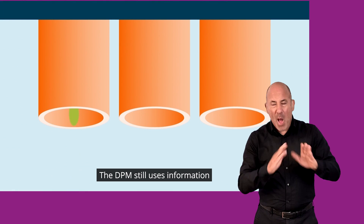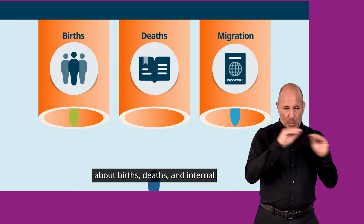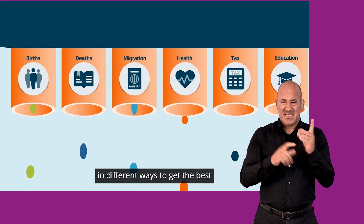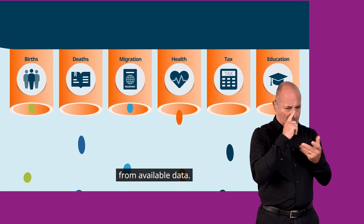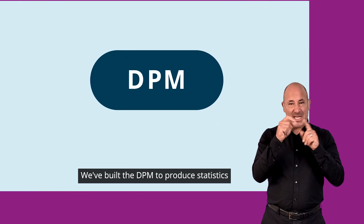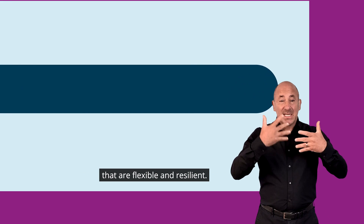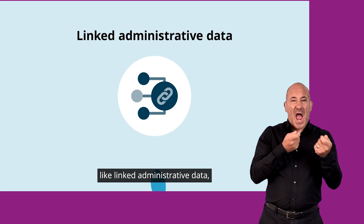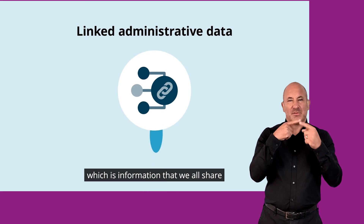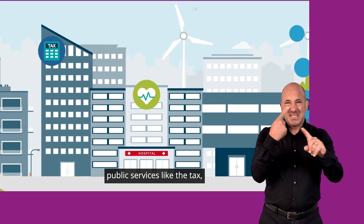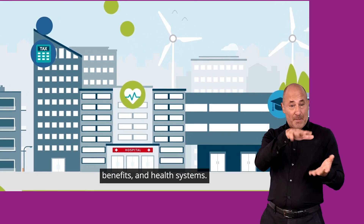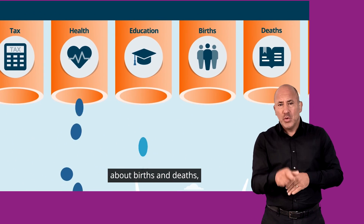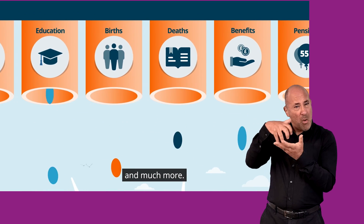The DPM still uses information about births, deaths and internal and international migration, but it also uses new information in different ways to get the best from available data. It uses a wide range of data sources, like linked administrative data, which is information that we all share when we access public services like the tax, benefits and health systems. The DPM also uses data about births and deaths, students and schools and much more.